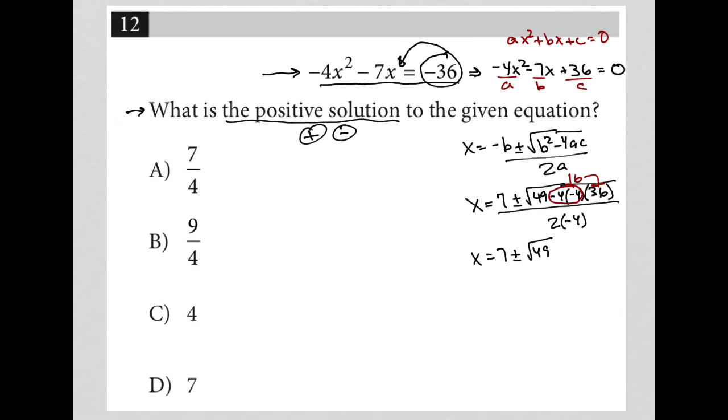So I end up with 49 plus 576 all over negative 8, right? Negative 4 times 2 is negative 8.